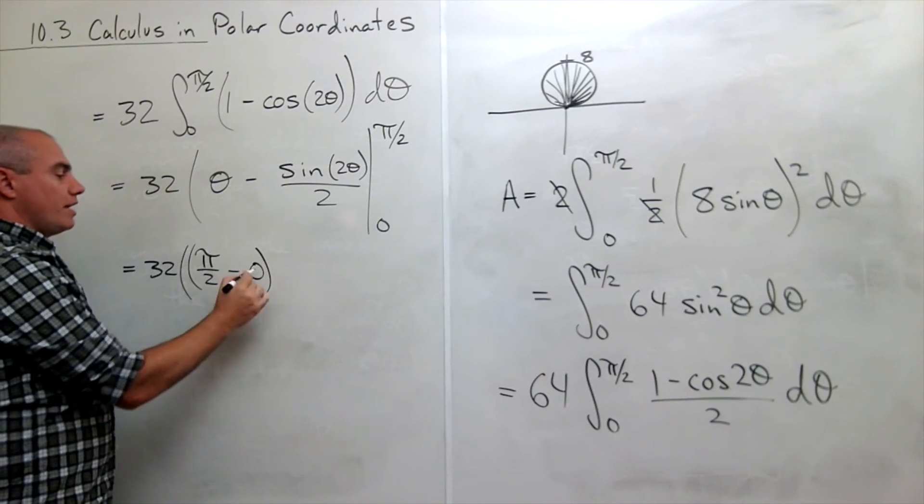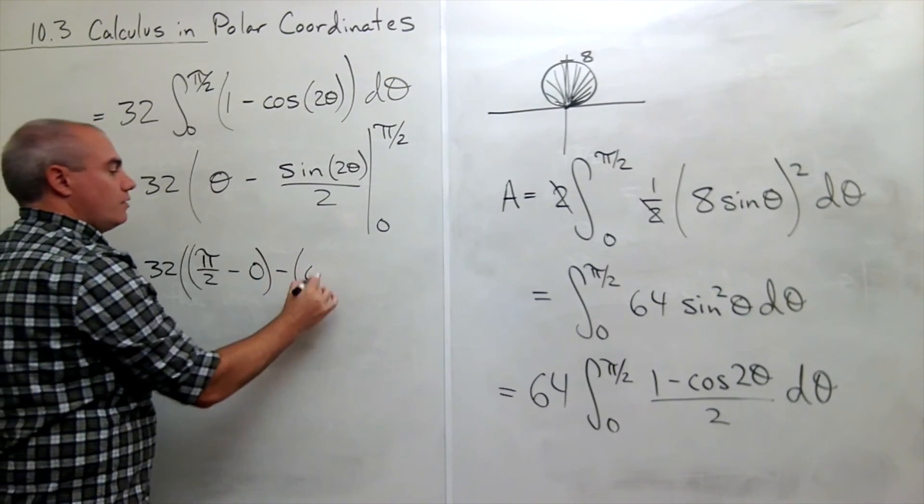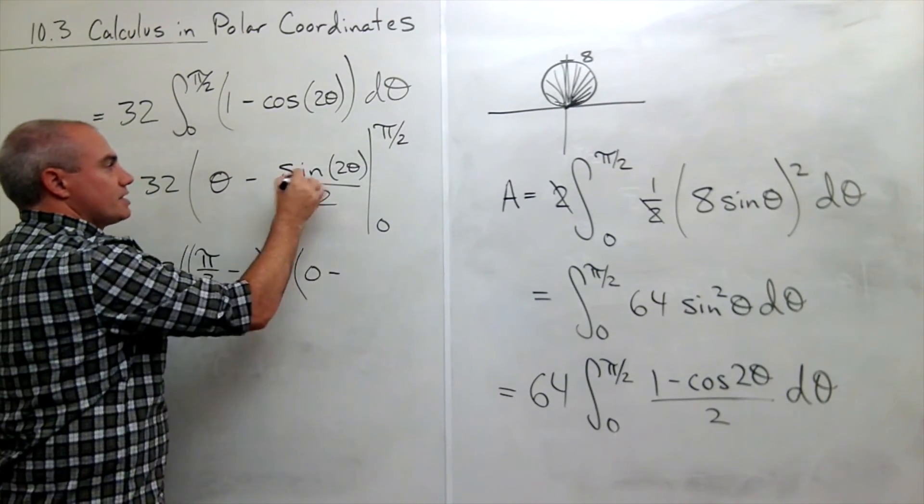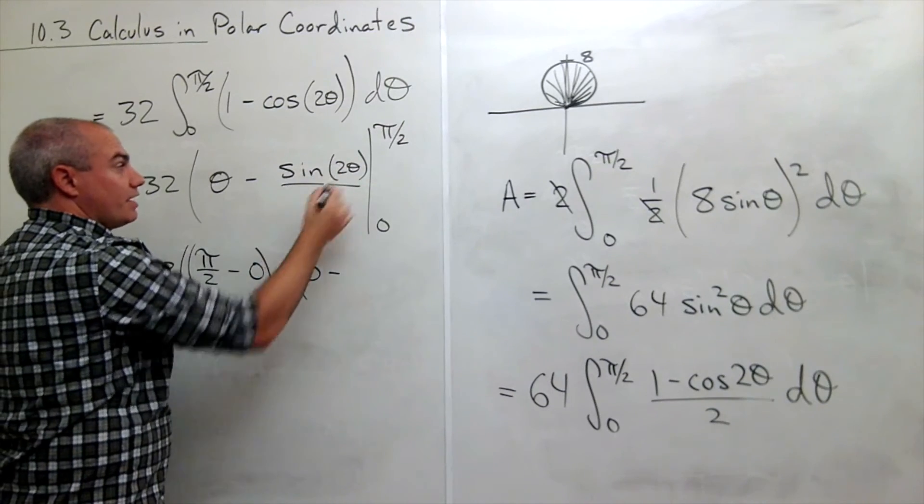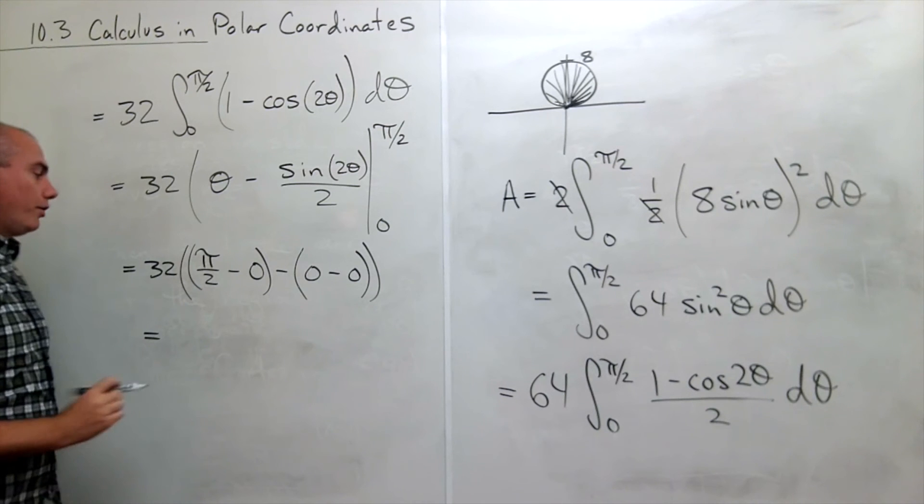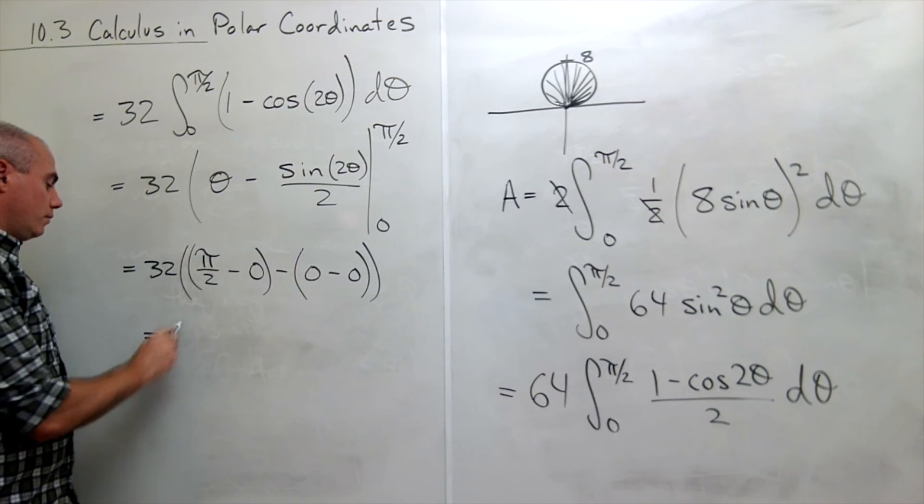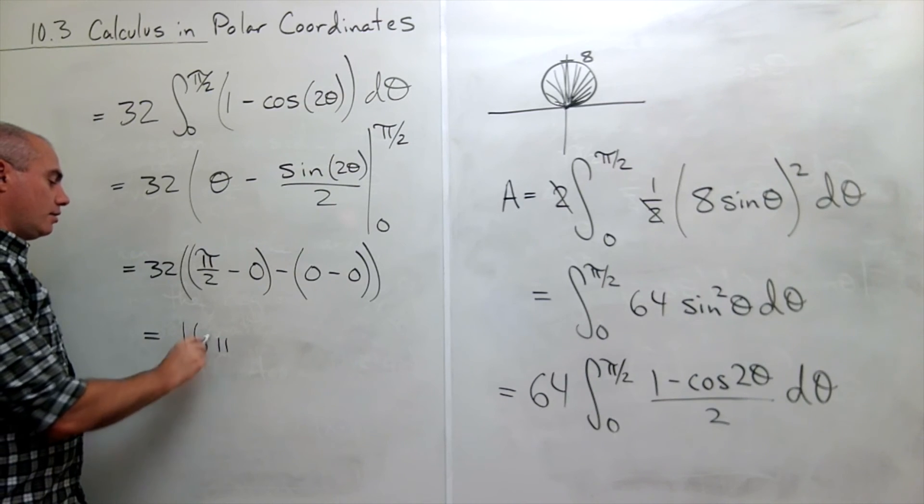So I get pi over 2 minus 0 minus, now plug in 0, I get 0 minus sine of 0 over 2. Sine of 0 is 0 and so we've got everything and all that we're left with is 32 times pi over 2 which is 16 pi.